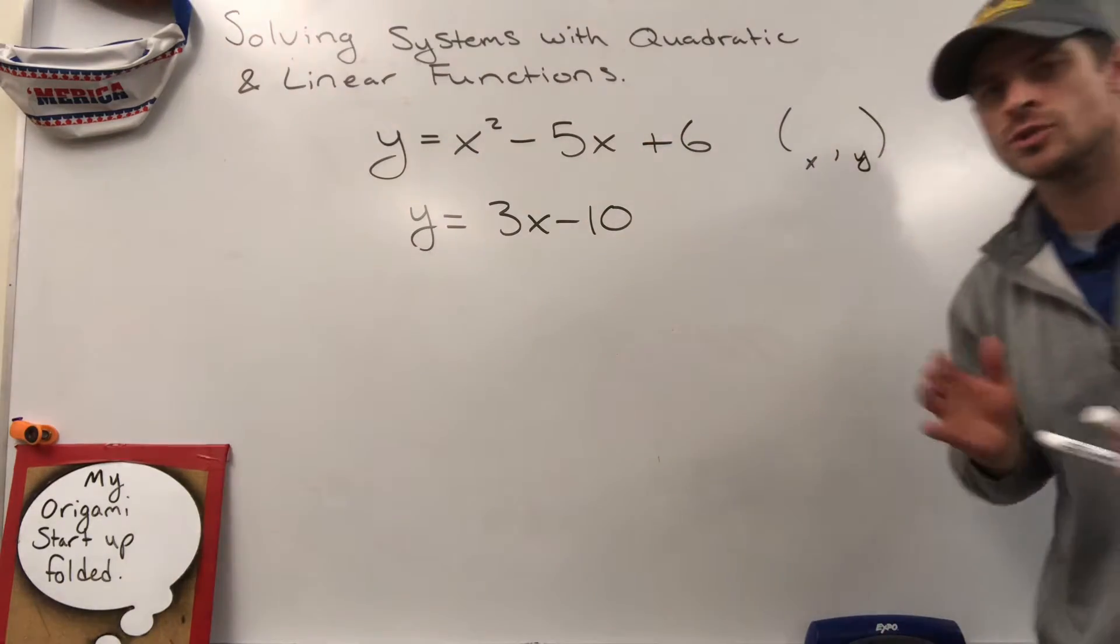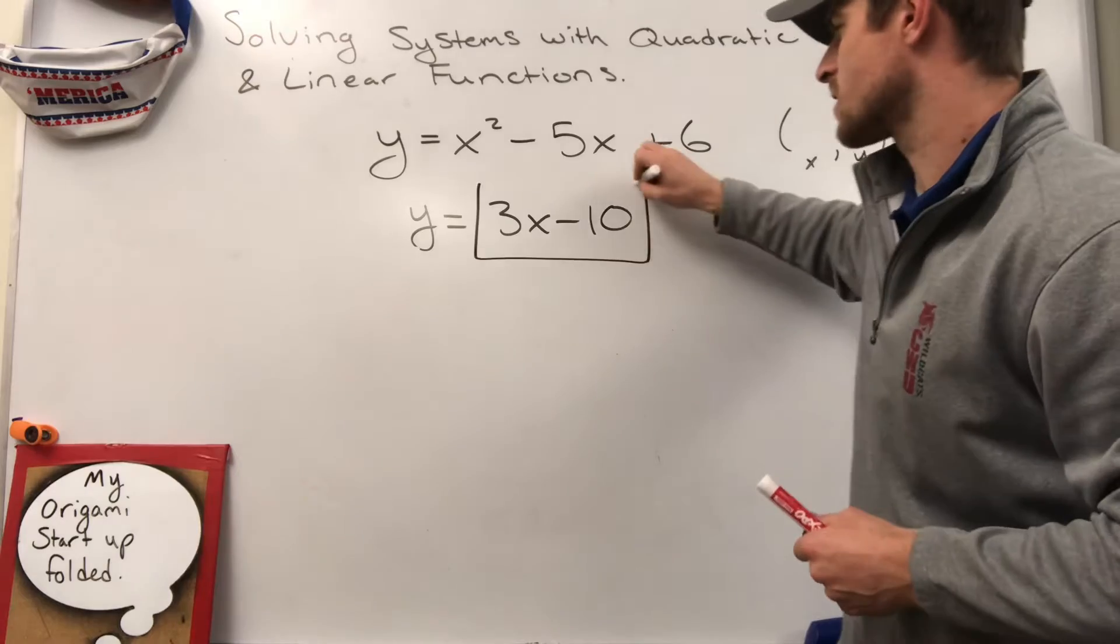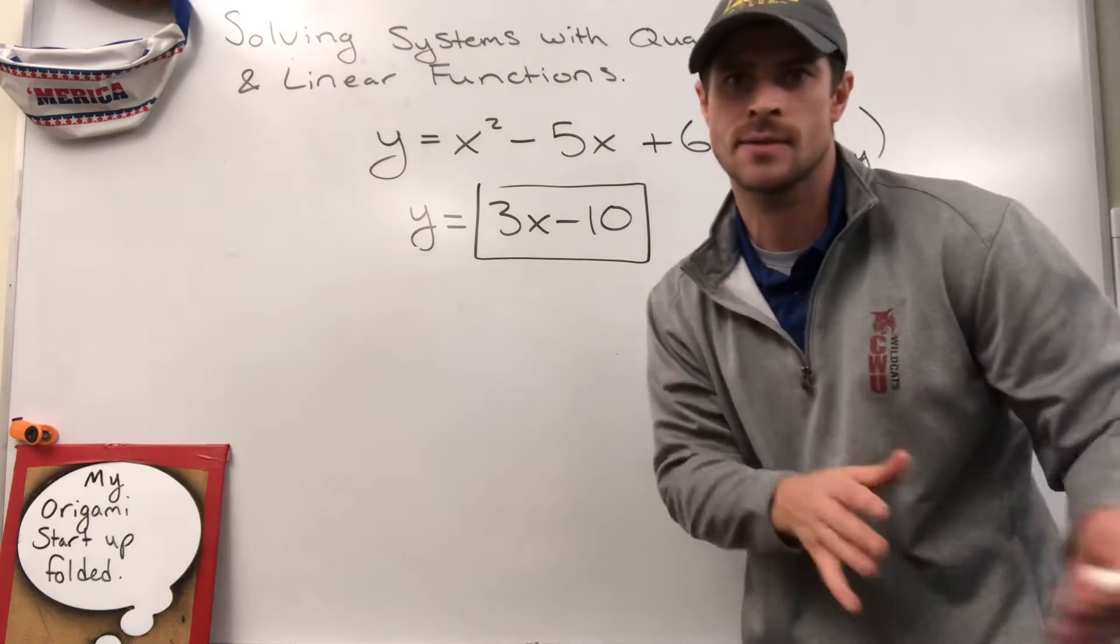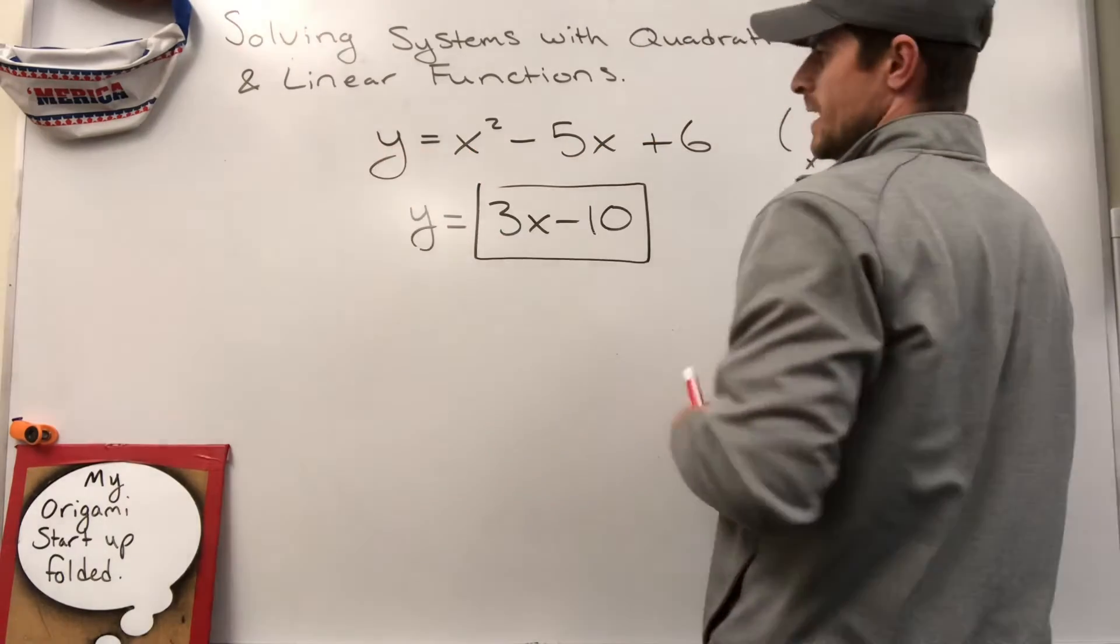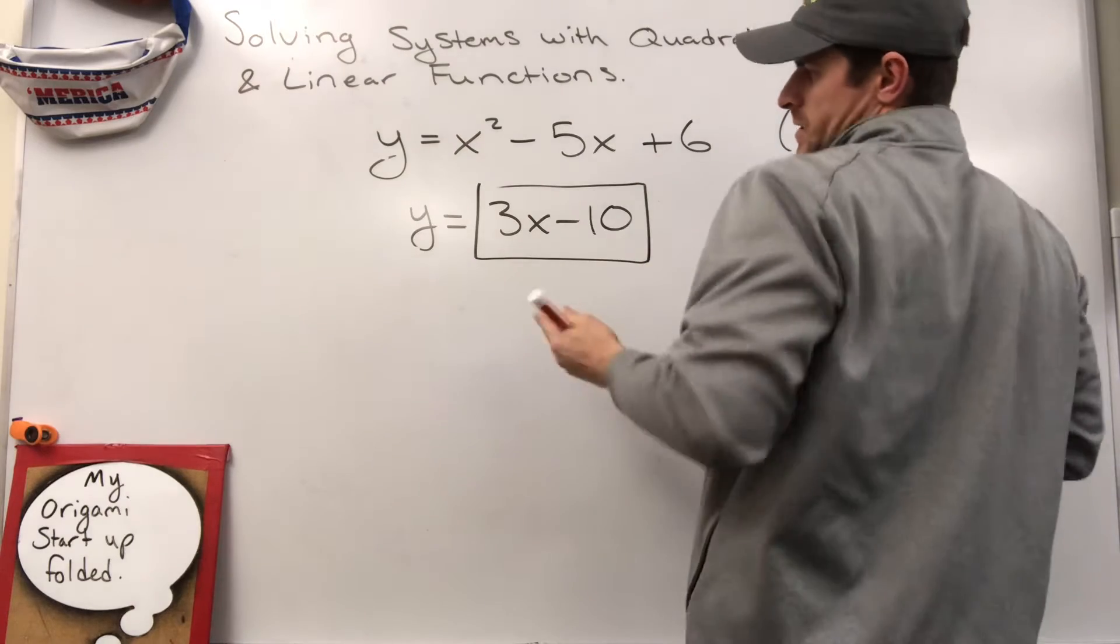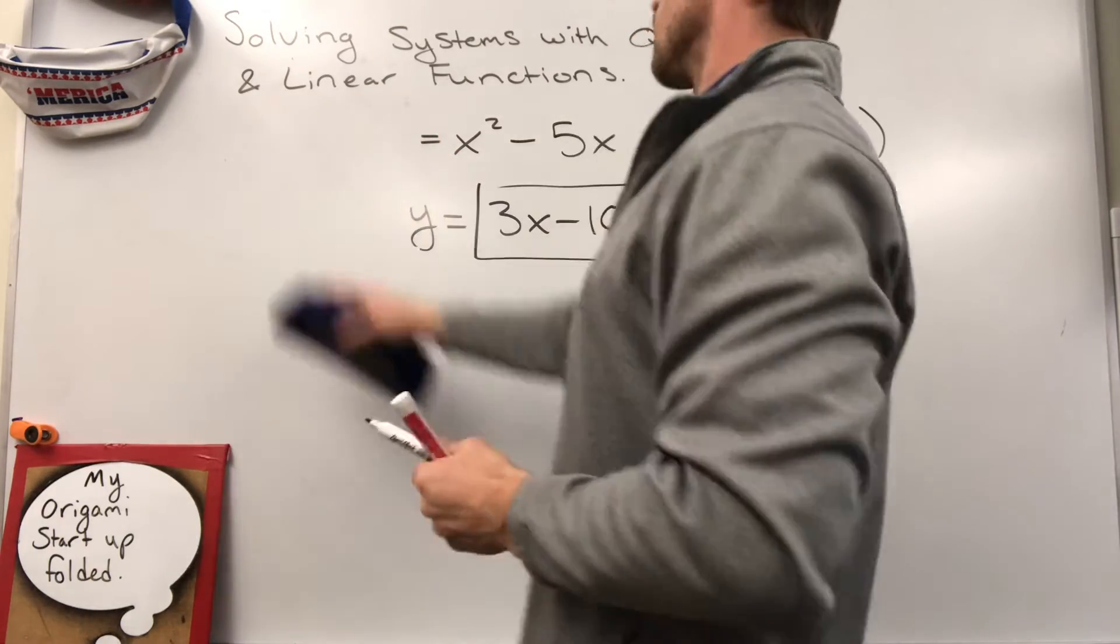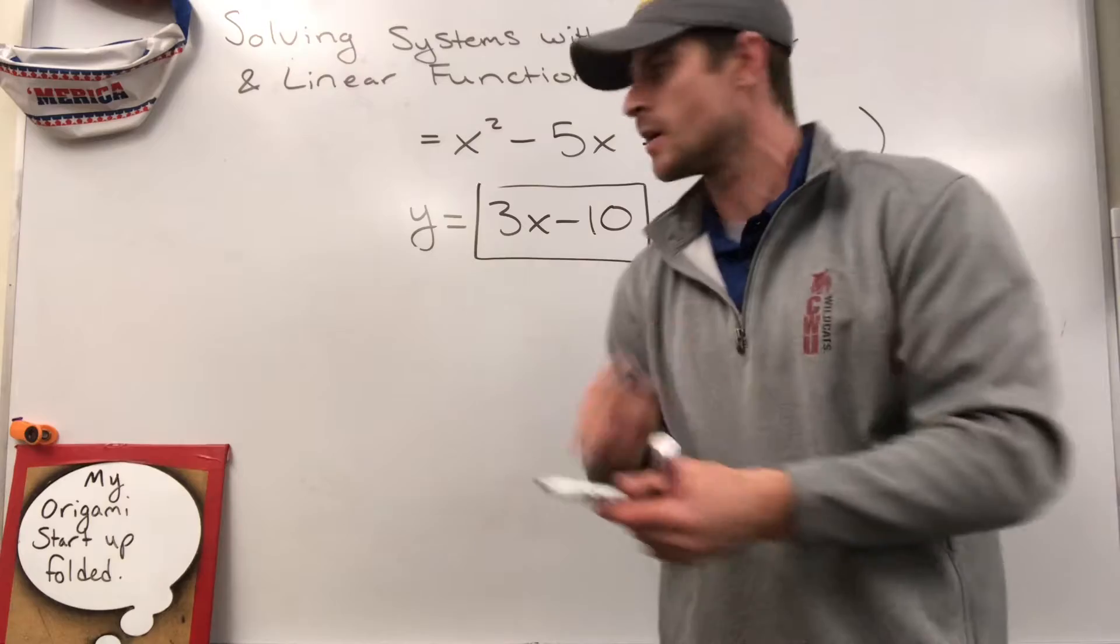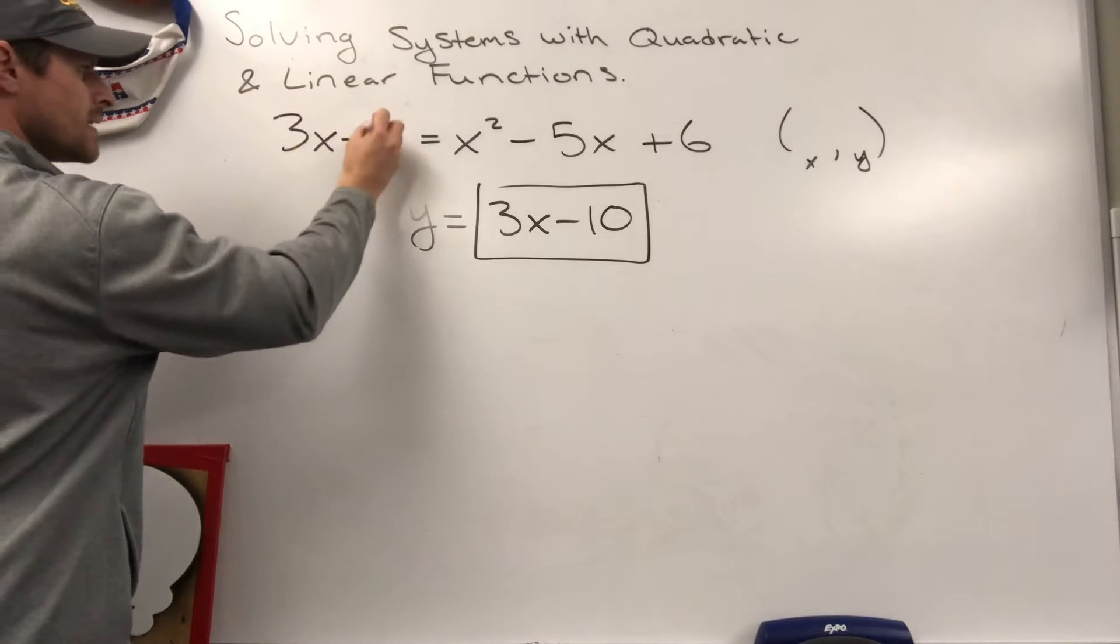What we're going to do is we're going to use the substitution method to solve this. So what I want you to do is I want you to look at this bottom equation, and I want you to put a box around the expression of 3x minus 10. 3x minus 10 is equal to y, or in other words, it's the exact same thing as a y. So what we need to do is we need to take 3x minus 10. We're going to go up here to this top equation, and instead of saying y equals, I can say 3x minus 10 equals, because I'm just replacing, I'm just substituting y out for what it's equal to. So I erase. We call this the substitution method. It's no different than in a basketball game. Billy, you're out. Ricky, you're in. Subbing one person in for another. So I'm subbing this in for that. Putting it right here. 3x minus 10.